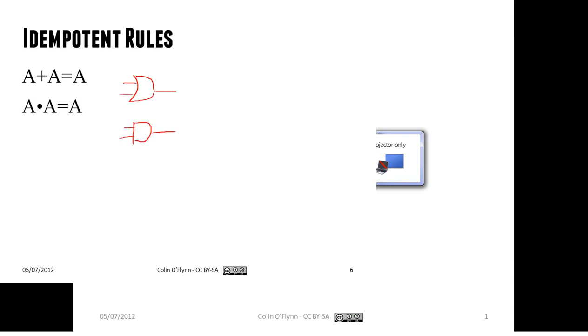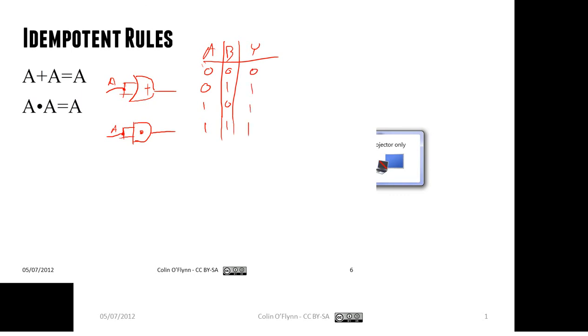These rules come about pretty simply, and we can build on them. If we have a gate — either OR or AND — and connect both inputs together, the output is simply the same as the input. So A OR A equals A, and A AND A equals A. This comes directly from the truth table: if both inputs are always the same, the output will always be the same.